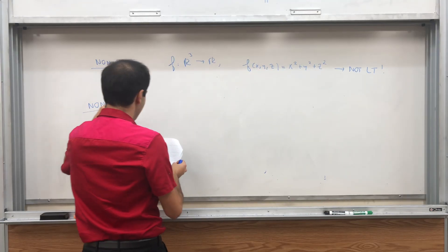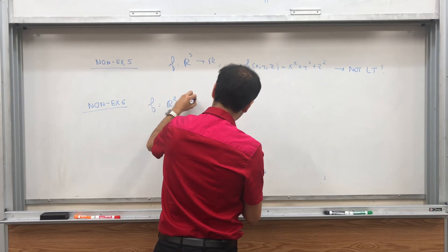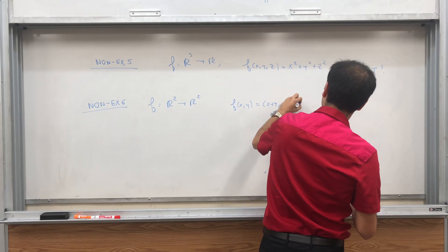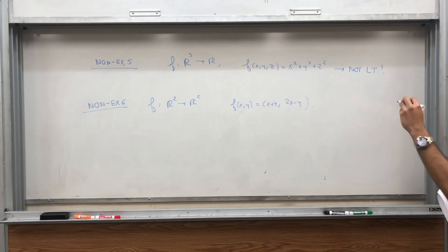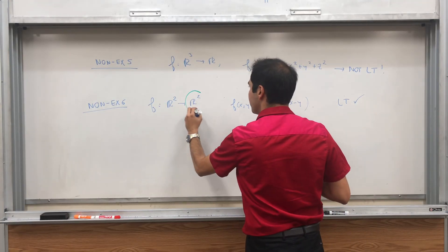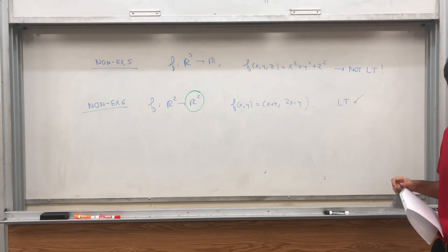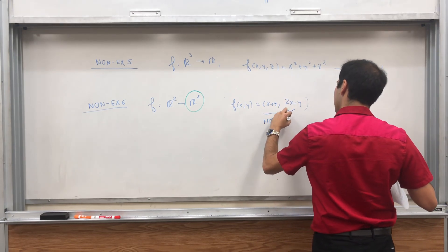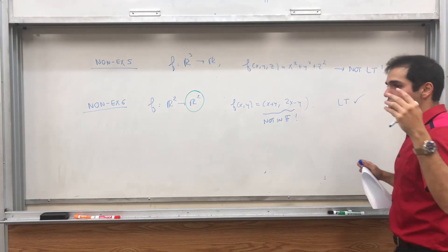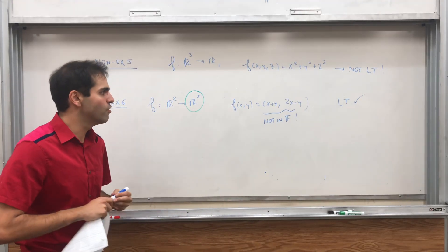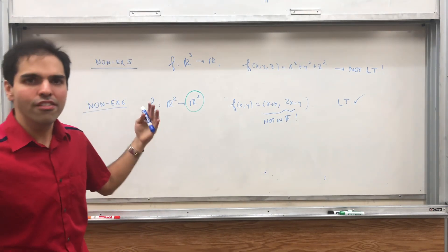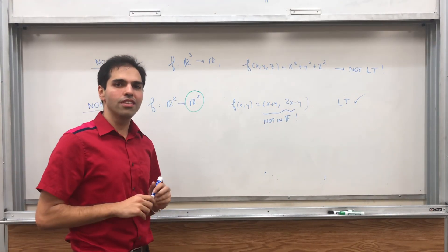And lastly, here's another non-example. F goes from R² to R². F of x, y is x plus y and 2x minus y. Yes, in this case, it is a linear transformation. You can check that. But the issue is, the reason it's not a linear functional, is because the values are not in R, it's in R². So it's very important that the values have to be in your field. So this is not in F. So we will not consider those kinds of linear transformations. We'll just consider linear transformations from V to the field itself.